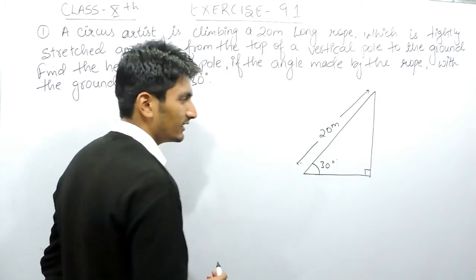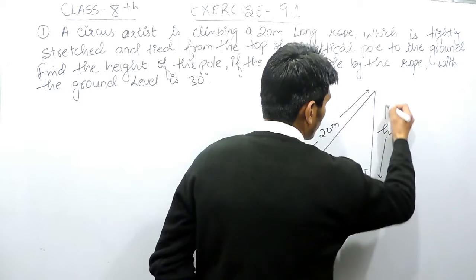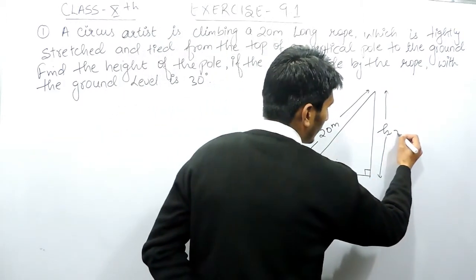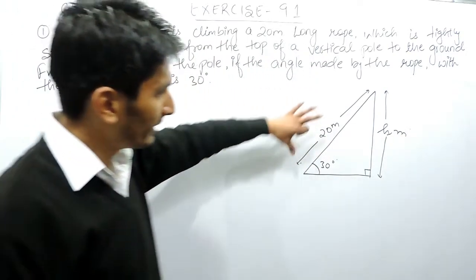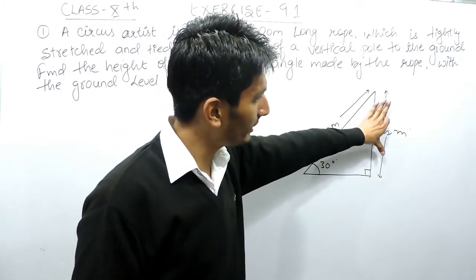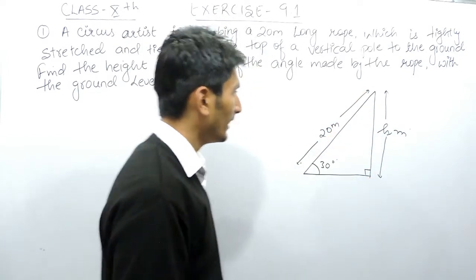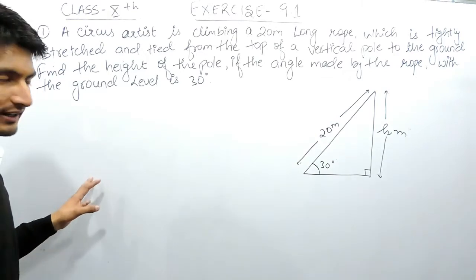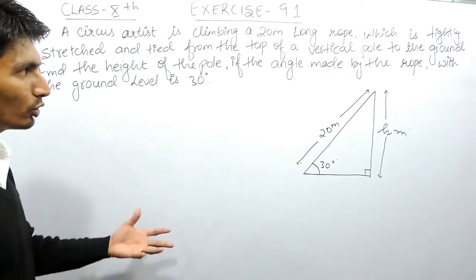The angle of elevation here is 30 degrees. We have to find the height of the pole — suppose the height of the pole is h meters. The measurement of one side and one angle is given, and we need to find the measurement of the other side of this right-angle triangle. We use the trigonometric ratios we learned in the previous chapter.